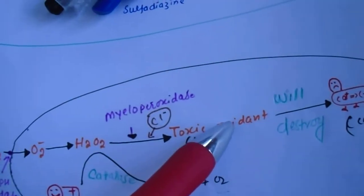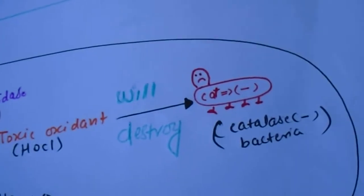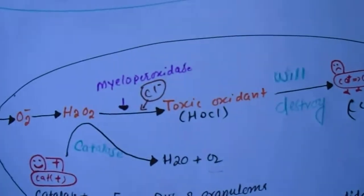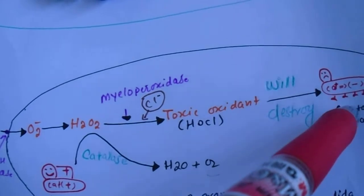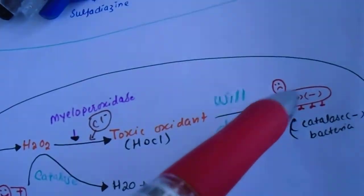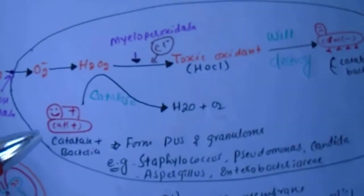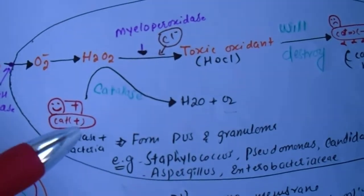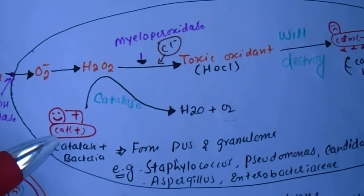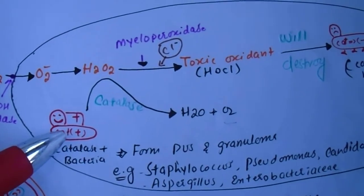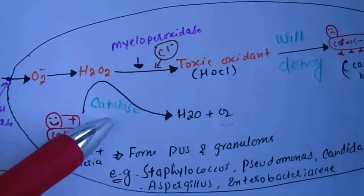Here you can see myeloperoxidase — with the help of myeloperoxidase, H₂O₂ converts into a toxic oxidant, HOCl. This toxic oxidant HOCl destroys catalase-negative bacteria. So by this oxygen-dependent killing mechanism, we can only destroy catalase-negative bacteria, not catalase-positive bacteria.